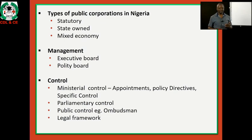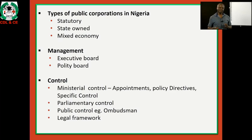The management of public corporations is under an executive comprising executive boards and policy boards. Control of corporations takes several forms: ministerial control — appointments of board members and the chairman are done by the minister; policy directives and specific controls; parliamentary control — they are accountable to Parliament; public control — for example, the Public Complaints Commission or the Ombudsman, which listens to complaints and grievances from the people against public corporations. There are also legal frameworks: because they are created by law, they can sue and be sued.